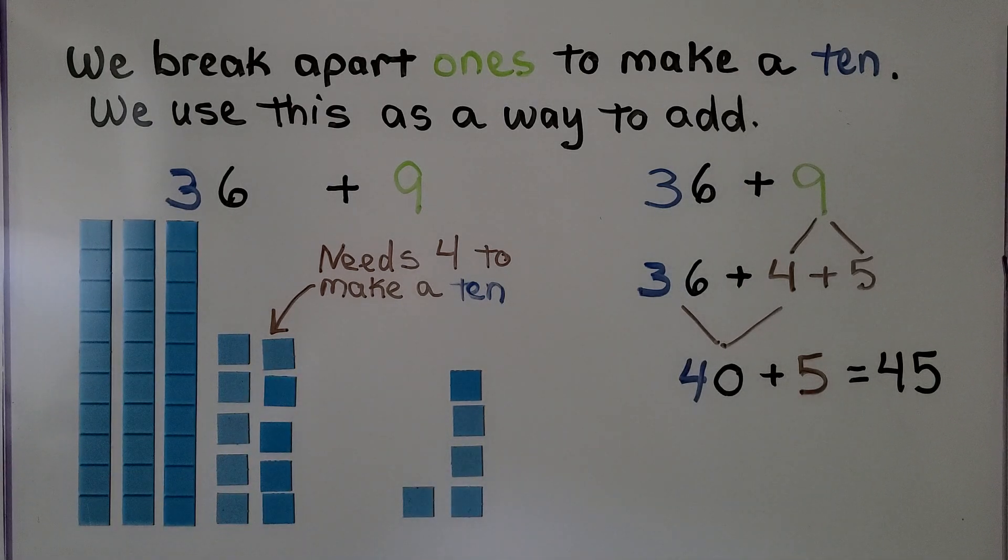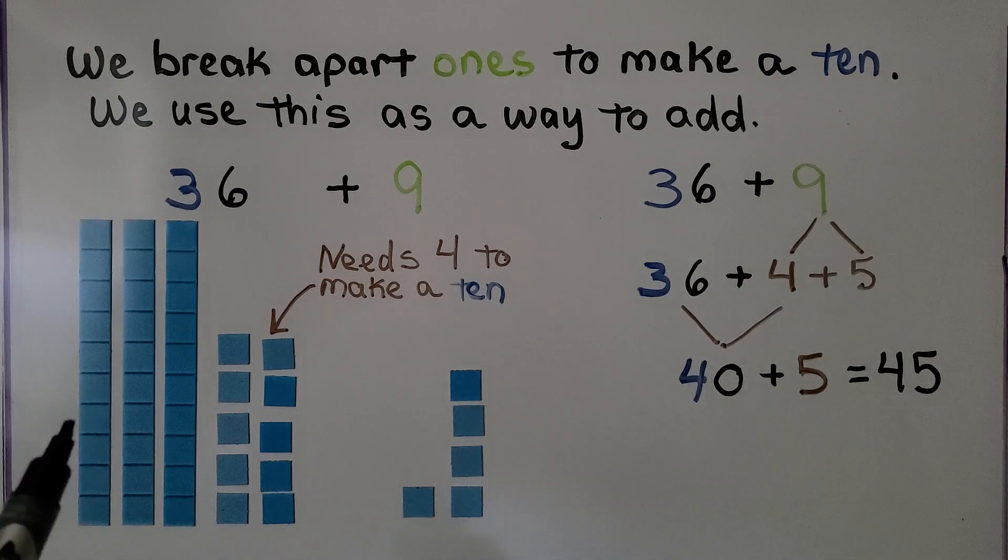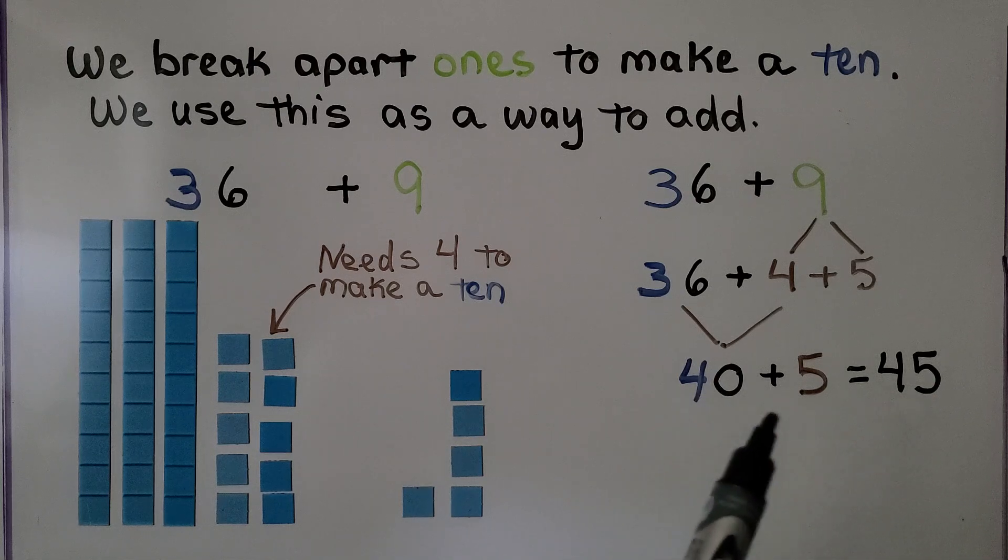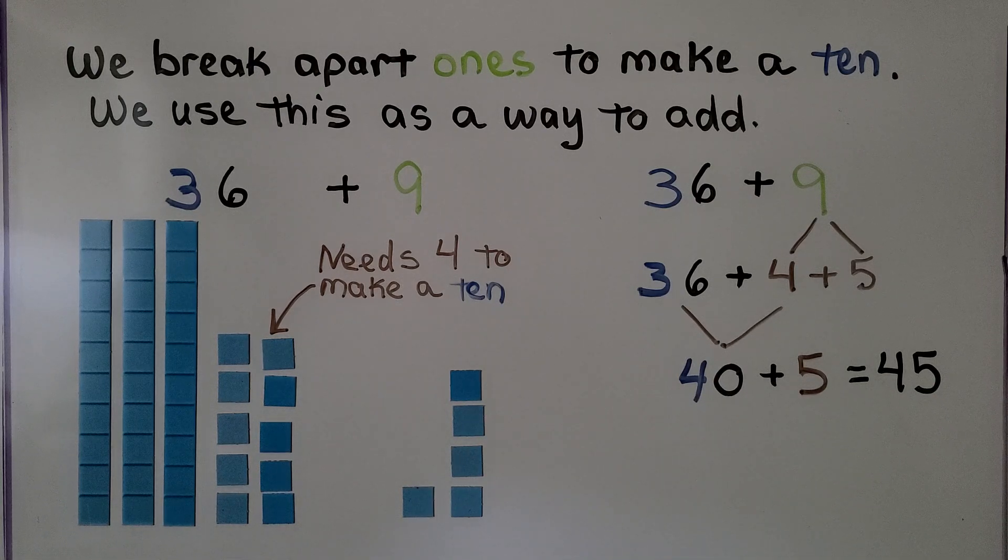We give it to the 6 to make a ten. Now we've got 1, 2, 3, 4 tens, and 5 ones. We have 40 plus 5. It's equal to 45.